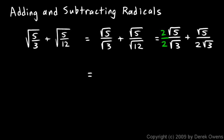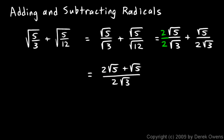So I get 2 root 5 plus the square root of 5, all over the denominator 2 times the square root of 3. Now the numerator: these two terms can be combined — they're both square root of 5 terms. 2 times the square root of 5 plus 1 times the square root of 5 gives me 3 times the square root of 5. So I have 3 root 5 over 2 root 3.